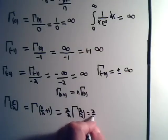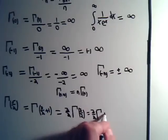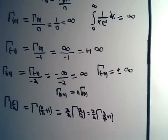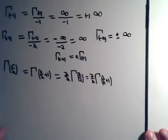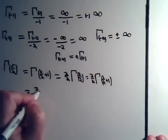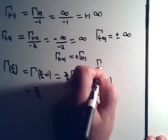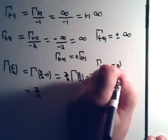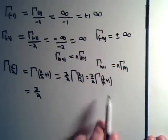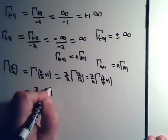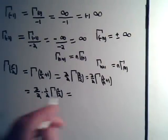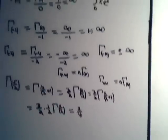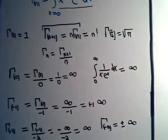We can rewrite this further: 3/2 times the gamma function of 1/2 plus 1. Applying the formula again, that gives 3/2 times 1/2 times the gamma function of 1/2. So this equals 3/2 times 1/2, which is 3/4. And since the gamma function of 1/2 is the square root of pi, we get 3/4 times the square root of pi.